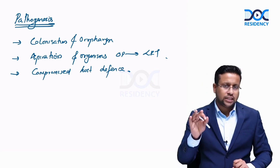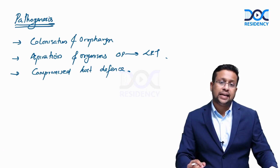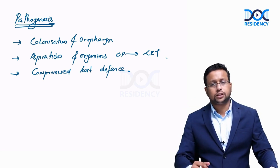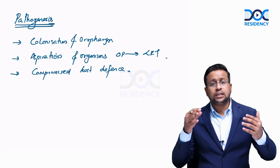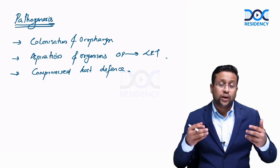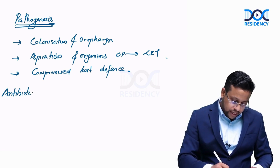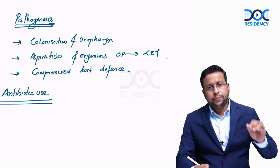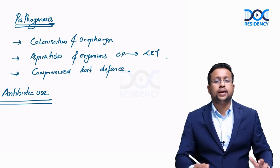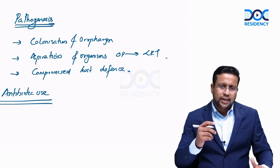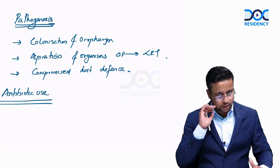The first step is colonization of organisms in the oropharynx, and VAP occurs when these organisms are aspirated into the lower respiratory tract. There are various risk factors that promote colonization. The most important risk factor is antibiotic use: antibiotics kill the normal flora of the oropharynx, which is then replaced by drug-resistant organisms. This is why prior antibiotic use is considered an important risk factor for multi-drug resistant organisms.